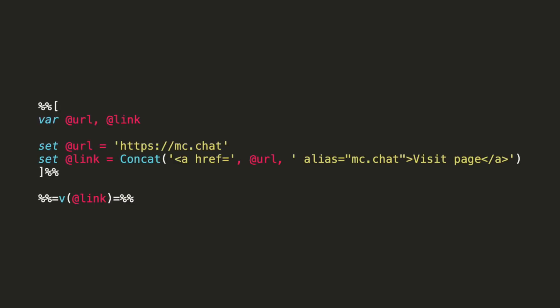But you may want to exclude these parameters from certain URLs — for example, when linking to external websites that don't accept or handle tracking parameters. The following AMPscript code will prevent these parameters from being appended to an individual link. Thanks for watching, and please visit mc.chat for more tips on working with Salesforce Marketing Cloud. See you next time.